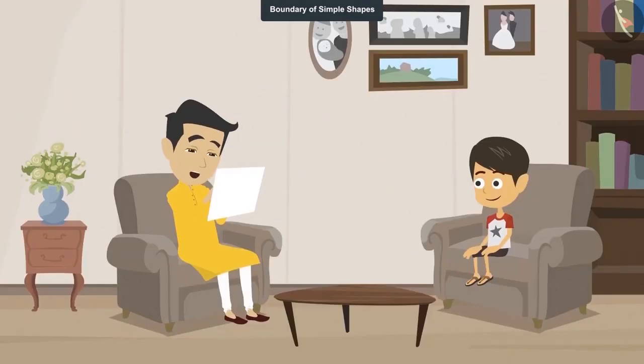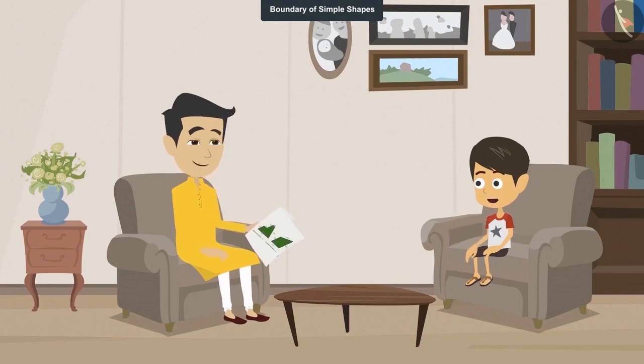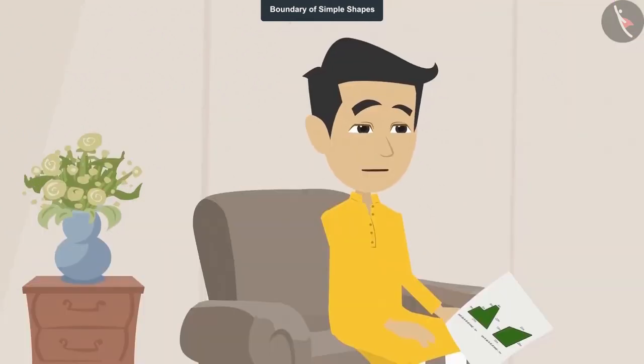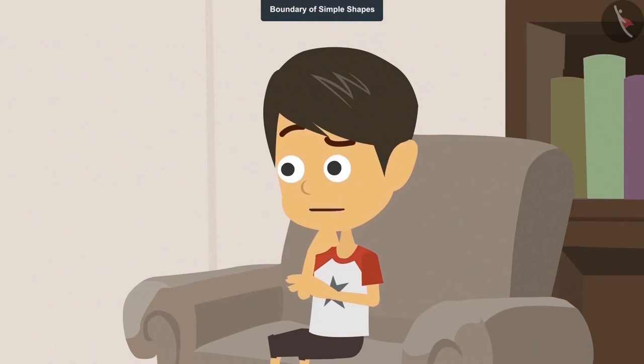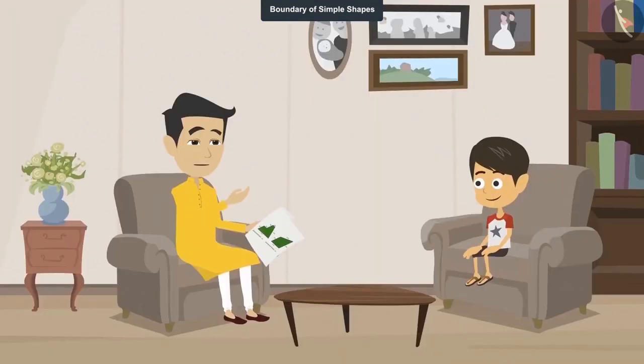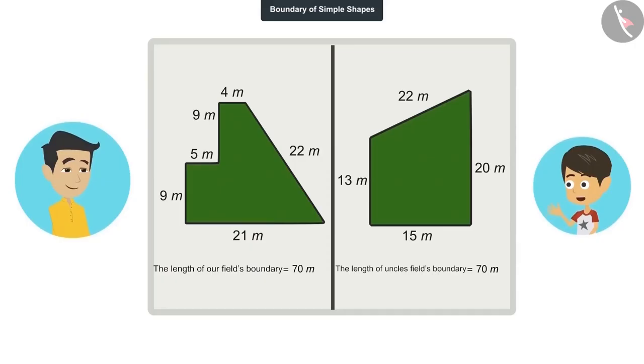No, Rheansh. There is no mistake. Your calculation is correct. So does that mean that the length of the boundaries of both the fields is the same? Yes. But how is this possible? Why is it not possible? The shape of the two fields is different. Then how come the measurement of their boundaries is the same?